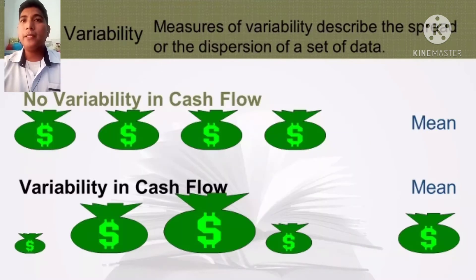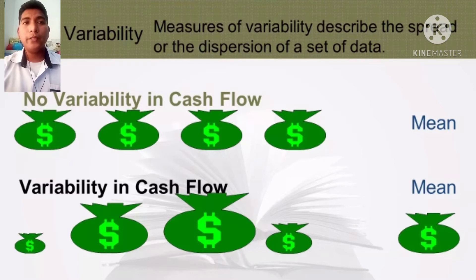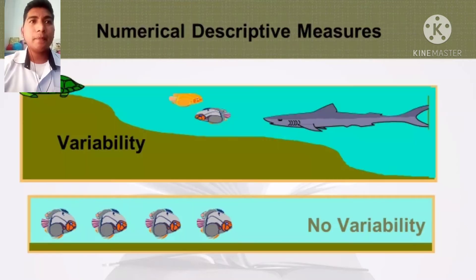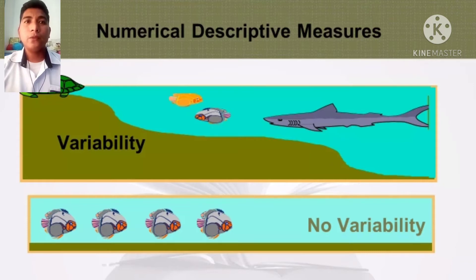Variability. Measures of variability describe the spread or dispersion of a set of data. For example, bags that are all the same size show no variability, while a cash flow with varying amounts shows variability with a mean somewhere in the middle. Variability is also called spread or dispersion — it refers to how spread out a set of data is and allows you to use statistics to compare your data to other sets of data.